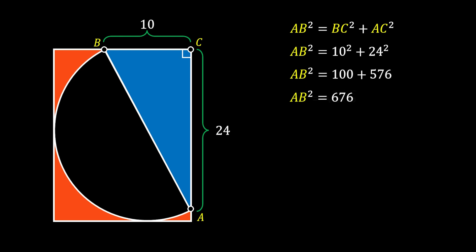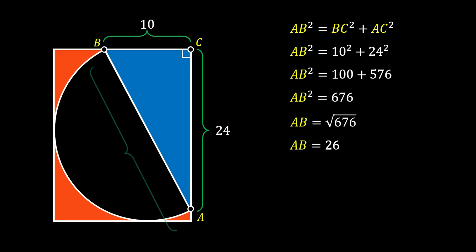Of course, we find the square root of that and get that line AB is equal to 26. As you can see, this line also represents the diameter of our half circle.